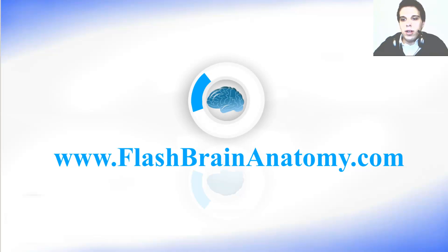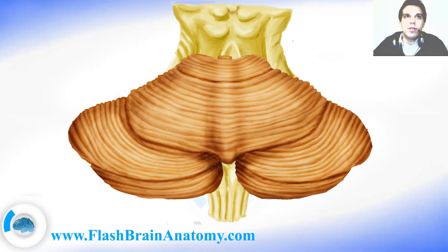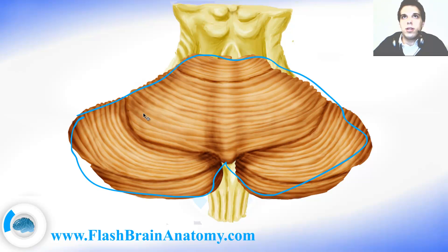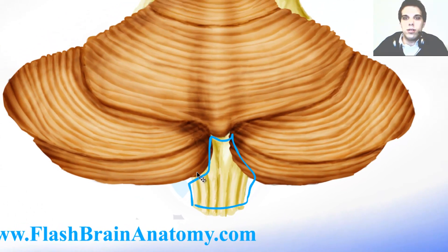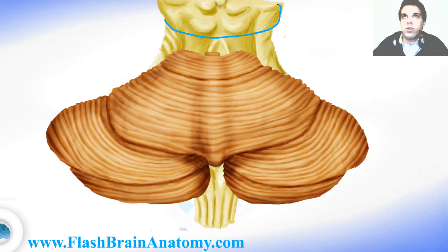Now I will illustrate the medulla oblongata from the dorsal point of view. This brown structure is called the cerebellum, or the small brain. This over here is the medulla oblongata. This part up there is already the mesencephalon, or midbrain.